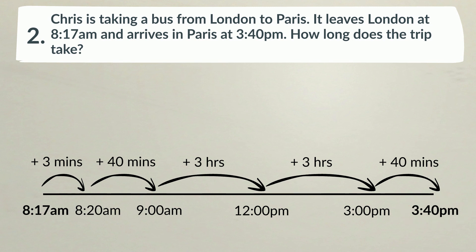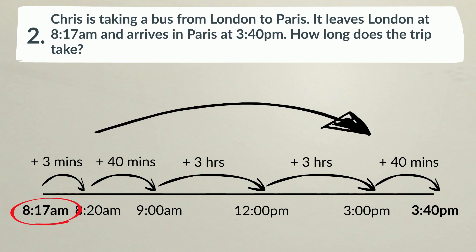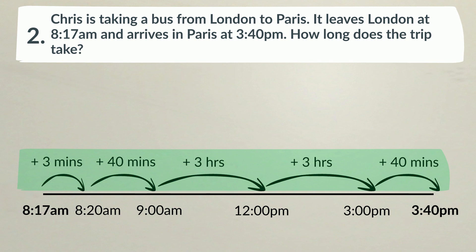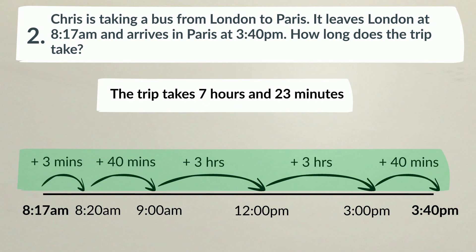Now, to calculate how much time has elapsed from the start to the end, we just have to add up our jumps. 3 minutes plus 40 minutes plus 3 hours plus 3 hours plus 40 minutes equals 7 hours and 23 minutes. The trip takes 7 hours and 23 minutes.